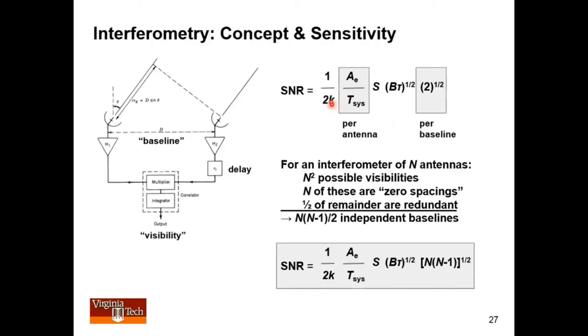The sensitivity of an interferometer is somewhat important to know. If you have a two-element interferometer, the radiometer equation is the same. You just increase the SNR by square root of two, because now you have two independent observations.